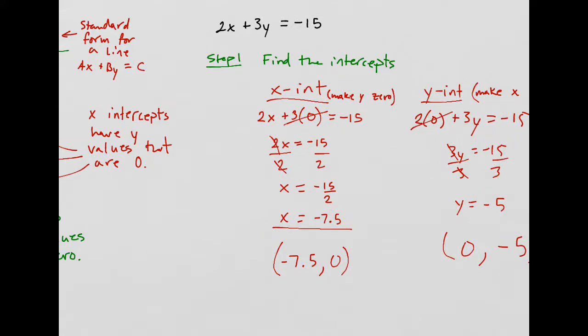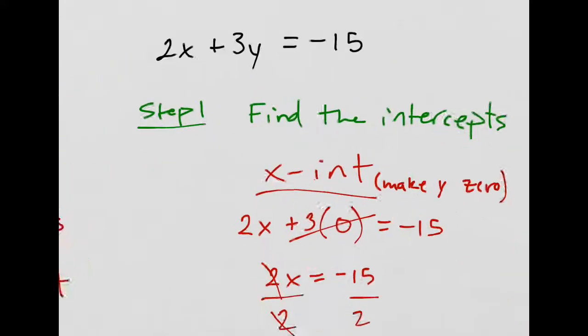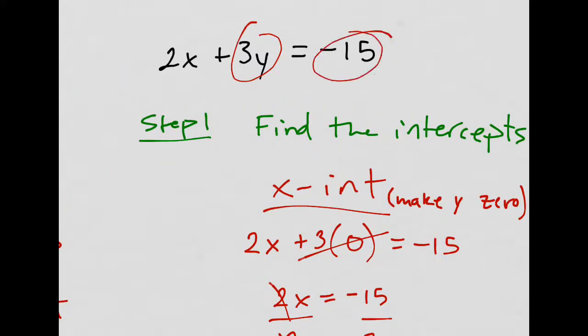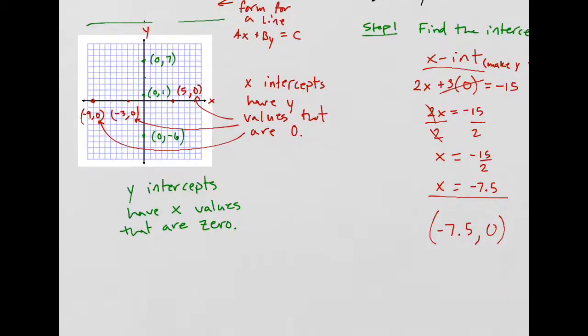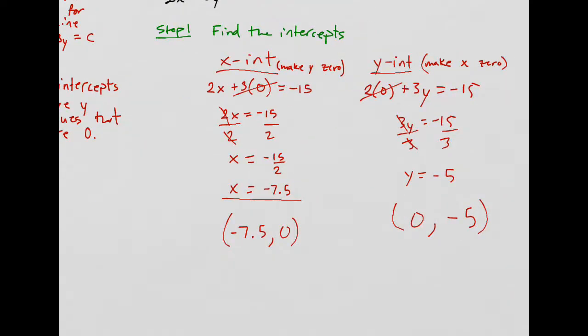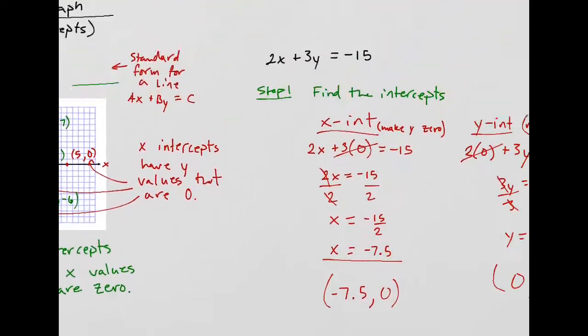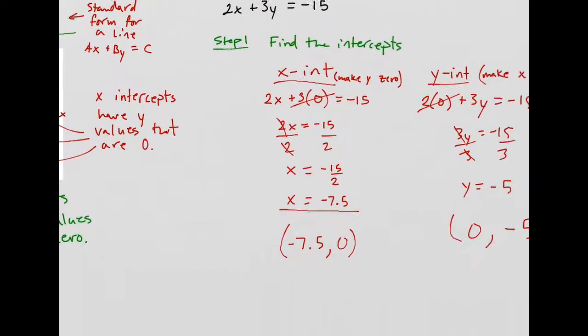All right. That was the first step. It becomes a lot quicker. You can actually do it in your head. Right? Because if you make Y 0, it's just negative 15 divided by 2. Or, if you make X 0, then it's just negative 15 divided by 3. So, you could actually do it in your head. And it becomes really easy. All right. So, that was step 1.